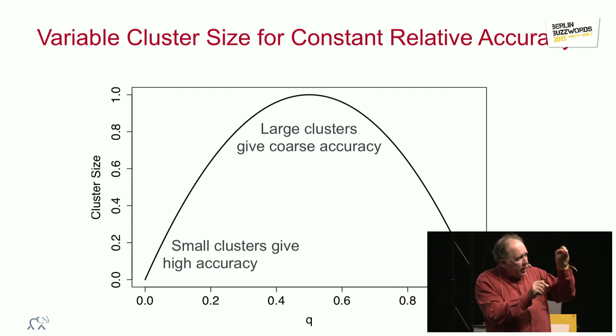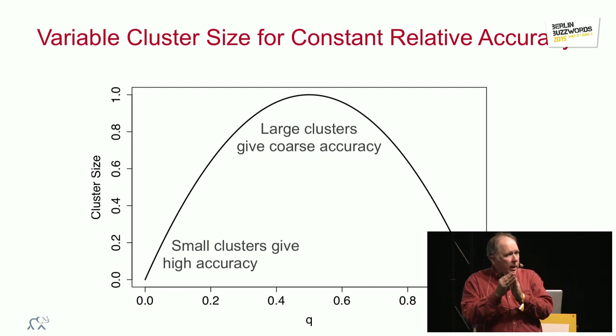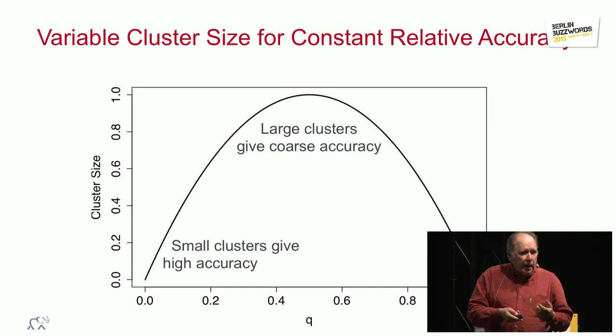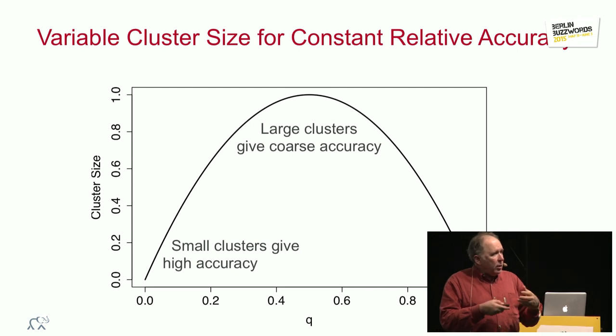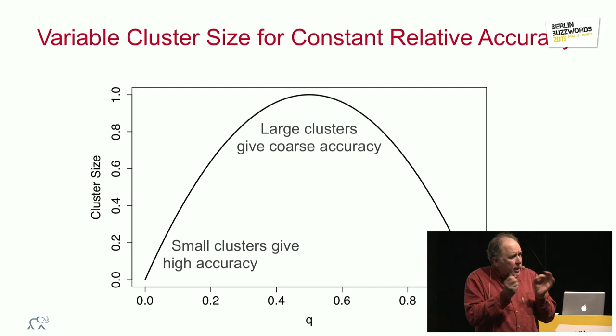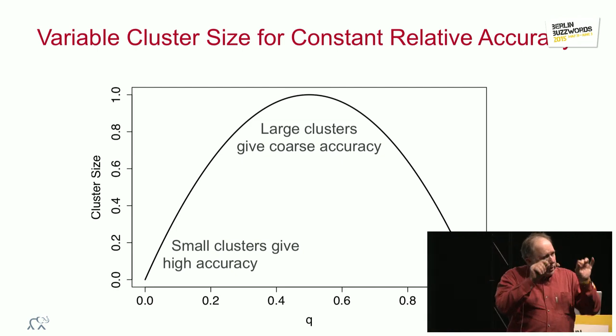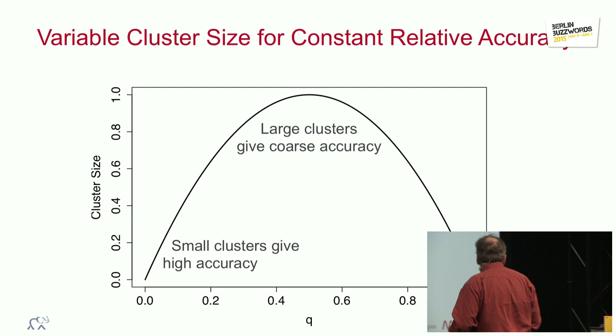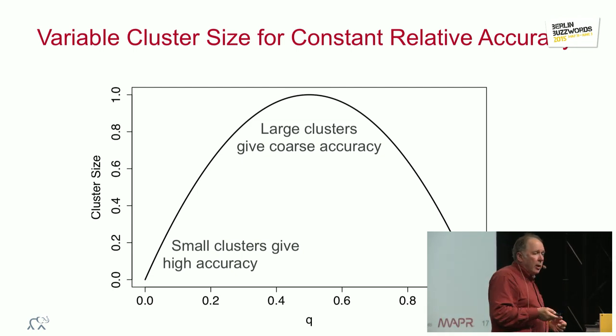Now, choosing exactly how that size is done, we could choose it to say b equal to q times 1 minus q. That means that near the ends, the size of the cluster gets smaller in direct proportion to the distance to that end of the scale that we're talking about. And that means our accuracy has exactly that same relative accuracy property that we want. That one idea of restricting the size of the clusters gives us all of the accuracy properties that we want.